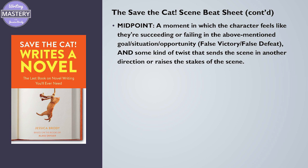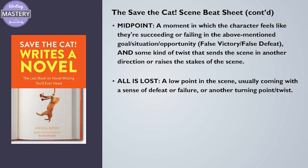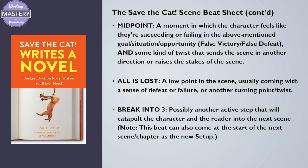Midpoint: a moment in which the character feels like they're succeeding or failing in whatever goal, situation, or opportunity was presented — either a false victory or a false defeat — and then some kind of twist sends the scene in another direction or raises the stakes. All is Lost: a low point in the scene, usually coming with a sense of defeat or failure, or another turning point or twist. Break into Three: possibly another active step that will catapult the character and the reader into the next scene. Note: this beat can also come at the start of the next scene or chapter as the new setup.